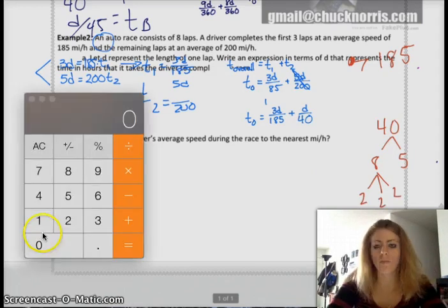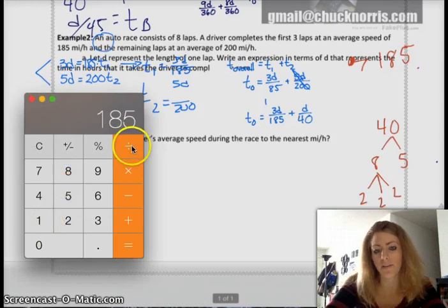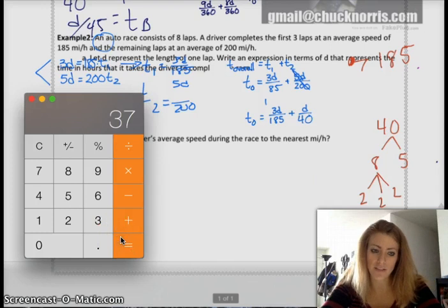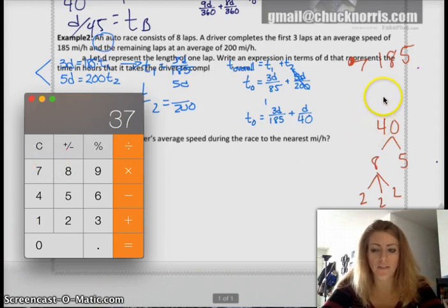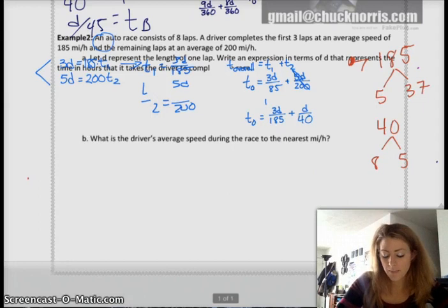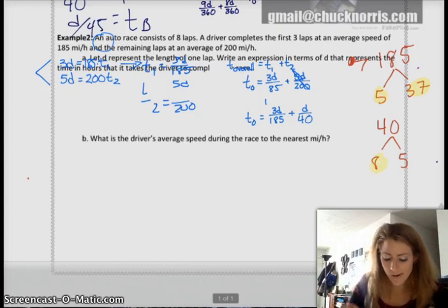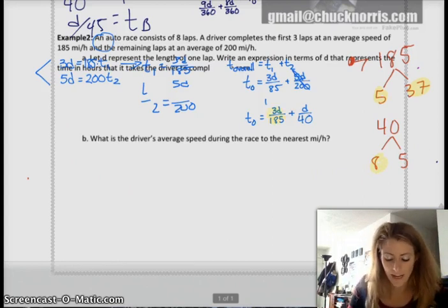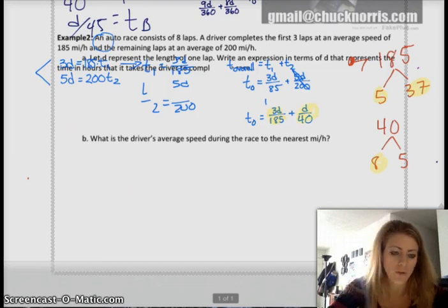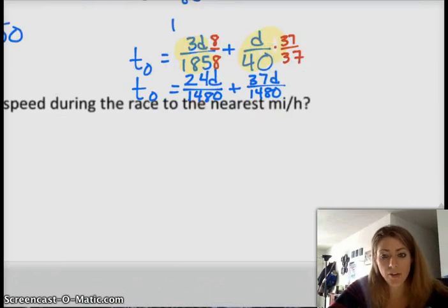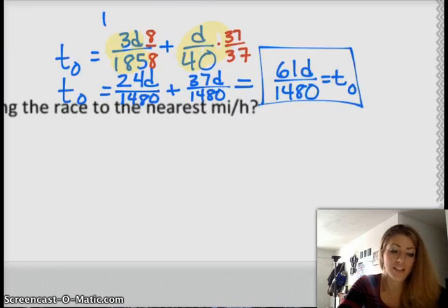Now, let's break up 185. Now, I know 185 has to be divisible by 5, so I'm going to start with that and see what I have. 37. Okay! 37 is prime, so that was easy. So I have 185 breaks up into 5 and 37. So, what that means is my common denominator is 5 times 37 times 8. So, we're going to need to multiply this first fraction by 8 and the second fraction by 37. So, when I multiply by 8 over 8 and 37 over 37, I end up with 24d over 1480 plus 37d over 1480. So, when I combine the numerator, keep the denominator. My final answer for part A is 61d over 1480 equals my overall time.